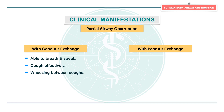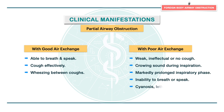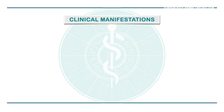On the other hand, patients with poor air exchange present with weak, ineffectual cough or no cough, a crowing sound during inspiration, markedly prolonged inspiratory phase, inability to breathe or speak, cyanosis, lethargy, and disorientation. Coming to complete airway obstruction, it can be divided into three phases.